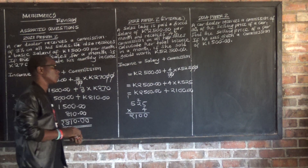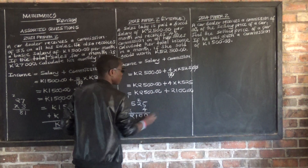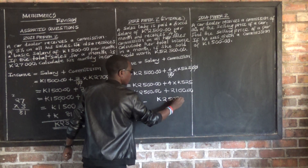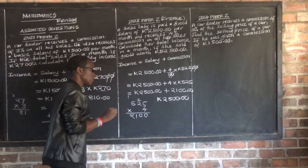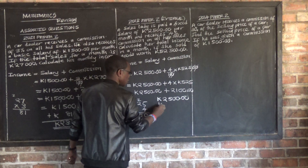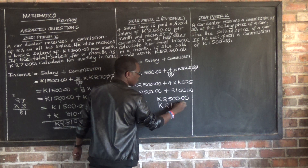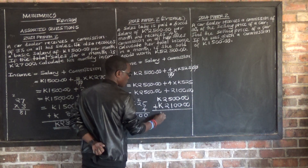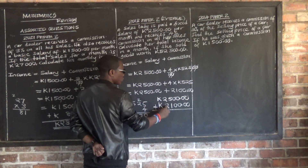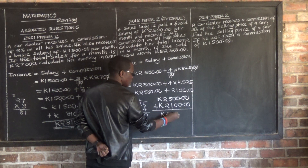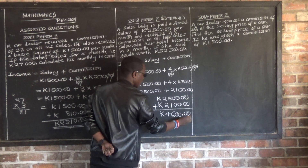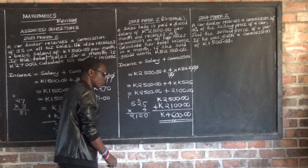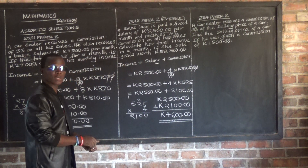Since we want the total income, we add salary plus commission. The salary was $2,500 and the commission was $2,100. Adding these together: 2,500 plus 2,100 gives a total income of $4,600. I hope you got this one correct.